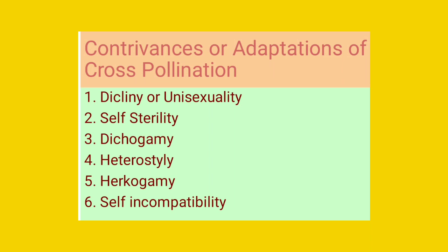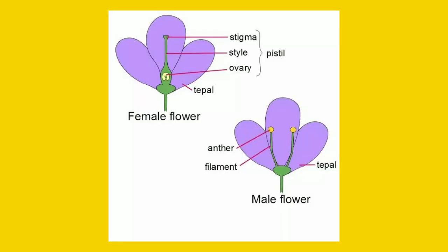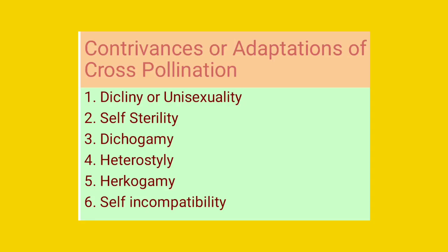The first contrivance of a cross-pollinated flower: in case of unisexual flowers where the male and female flowers are completely found in different plants, it is called dioecious. In case of unisexual flowers, this prevents the flower from self-pollination, as they are born either in a dioecious plant or in a monoecious plant. This is the first adaptation undergone in a cross-pollinated flower.